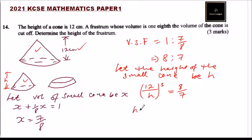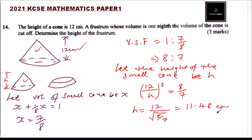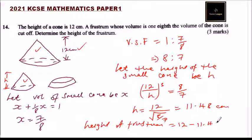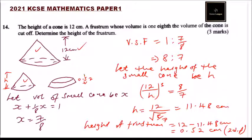So the height of the small cone equals 12 divided by the cube root of eight over seven, which when you use your calculator gives 11.48 centimeters to two decimal places. This means the height of the frustum equals 12 minus 11.48, that is the height of the small cone which was cut off, and this gives you 0.52 centimeters to two decimal places. That is how you get the height of the frustum.